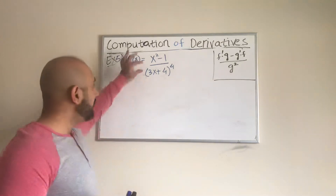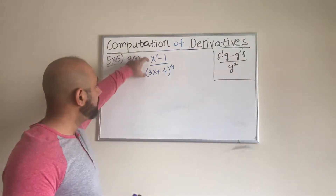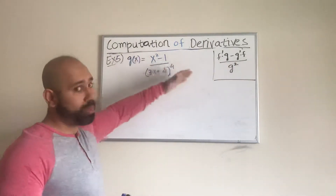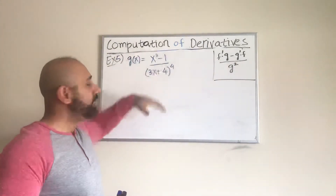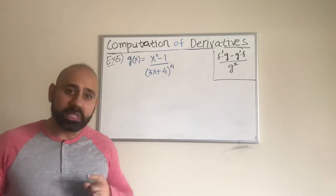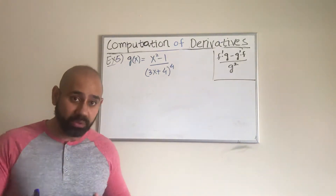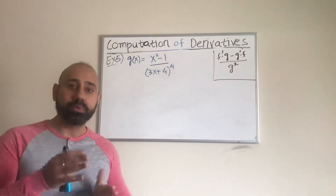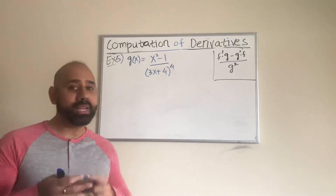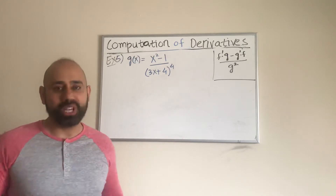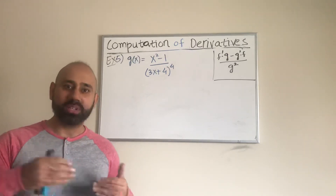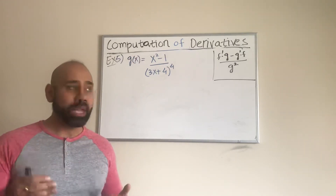If it was a product instead of these two quantities being divided — if it was a product of these two quantities — we would not just start with the chain rule first either. We would use the product rule first, and then we may have to use the chain rule once we set up the first few steps.